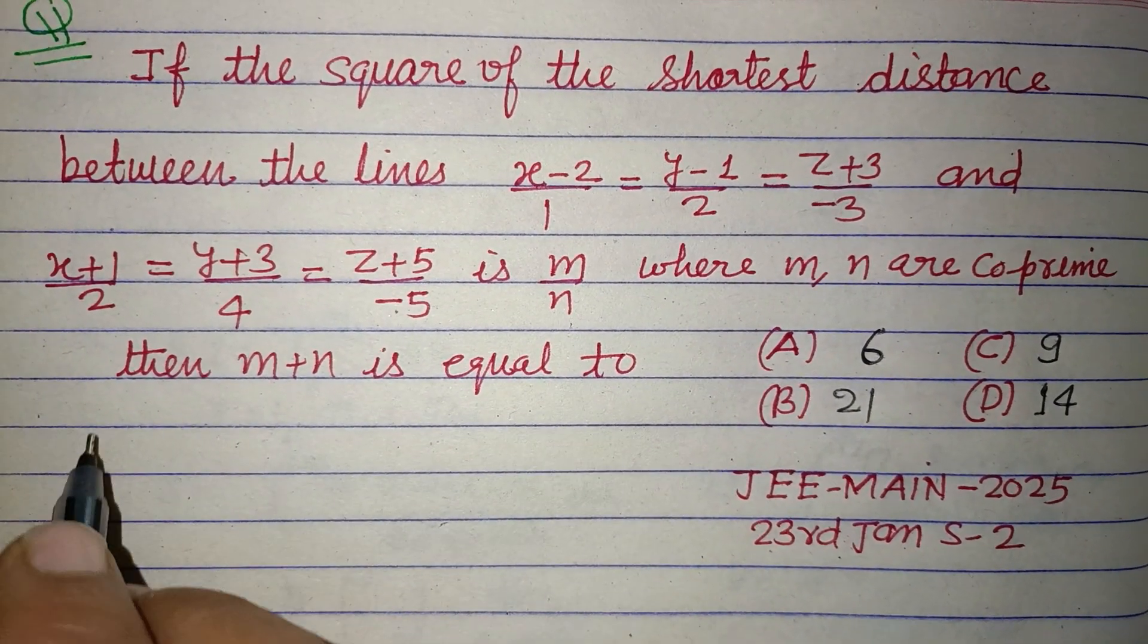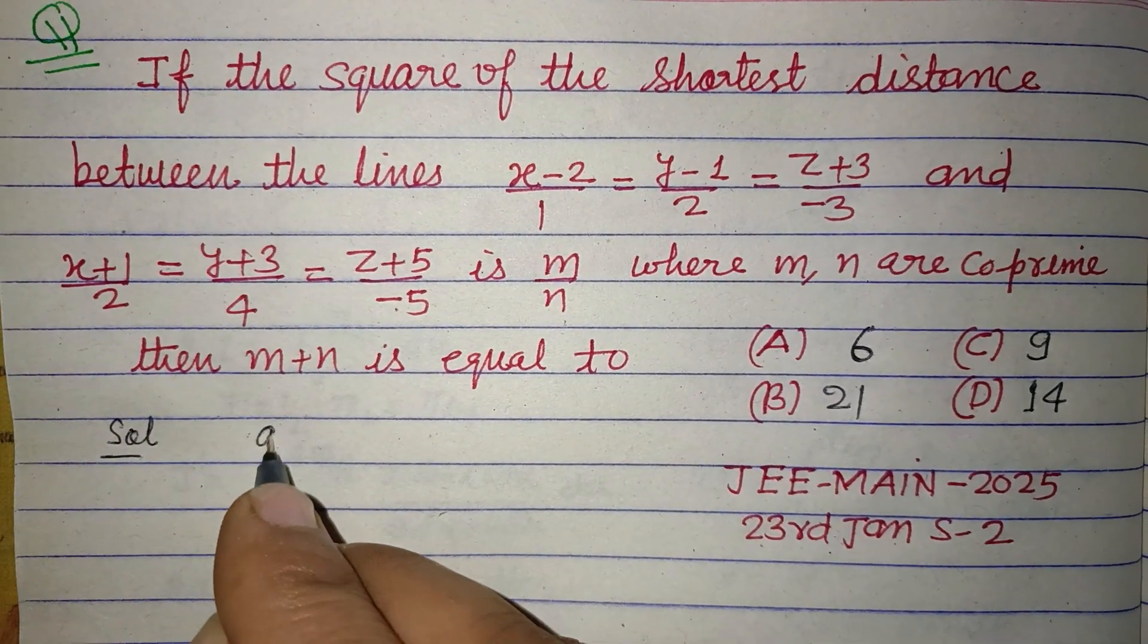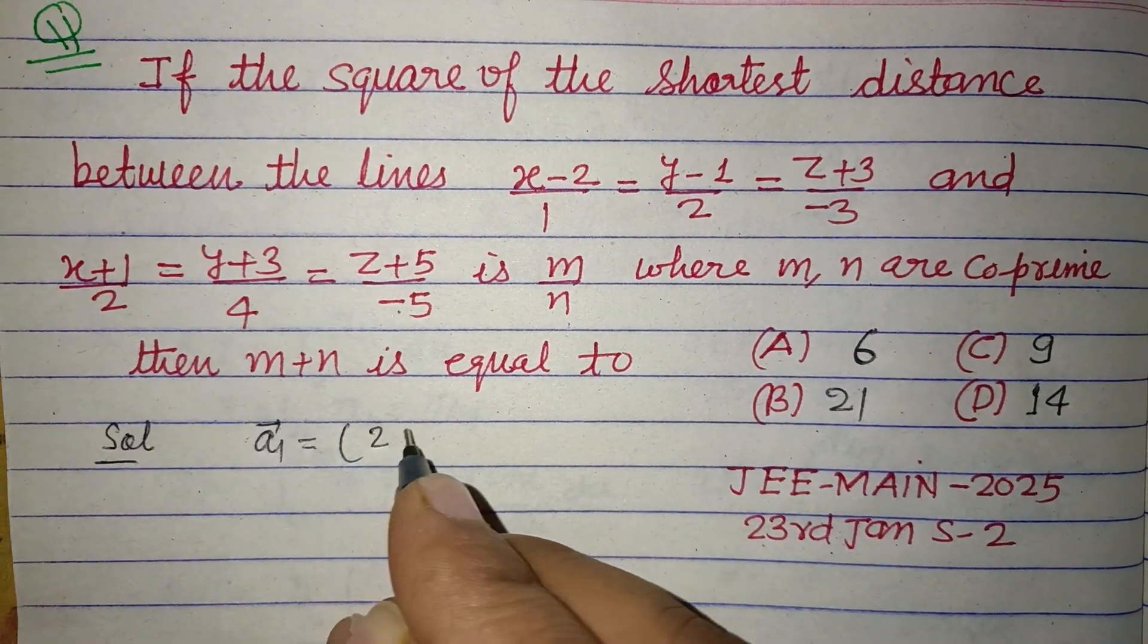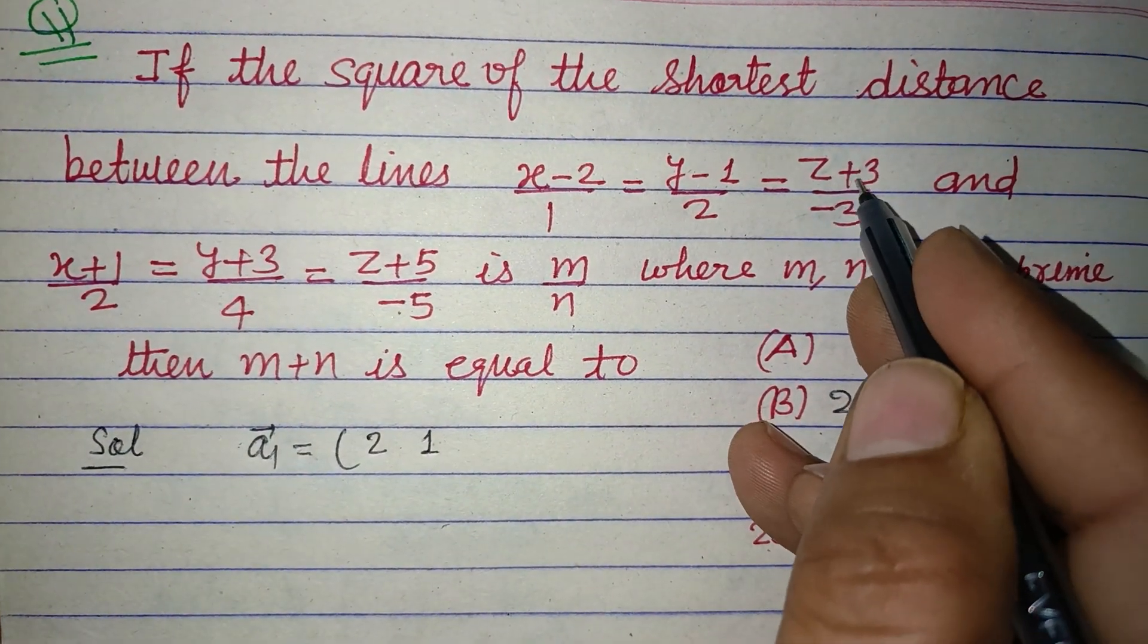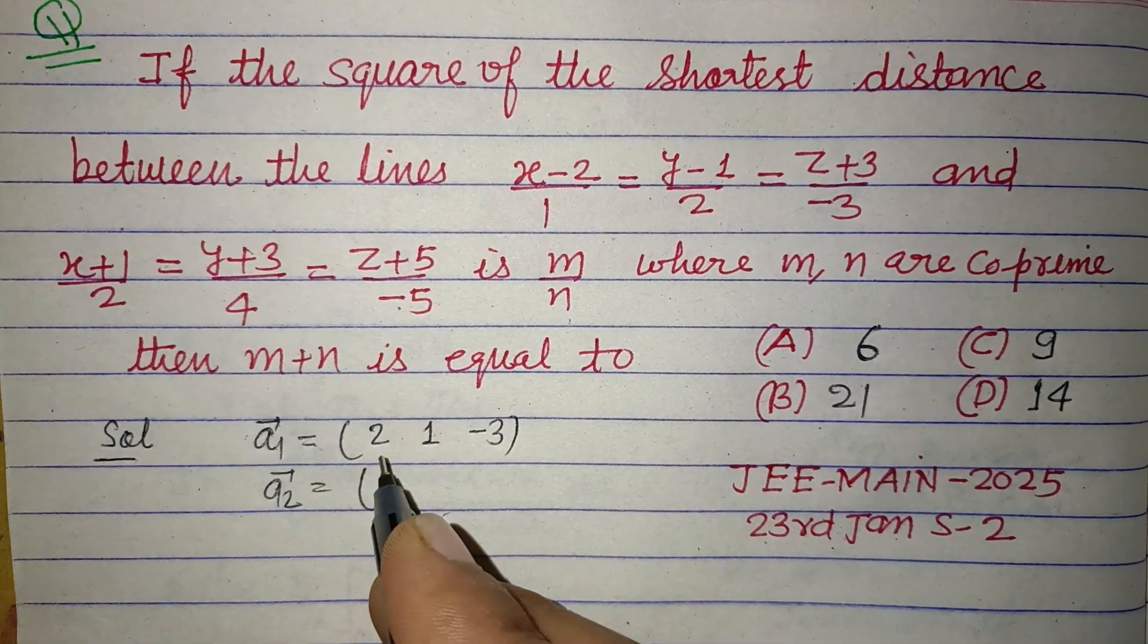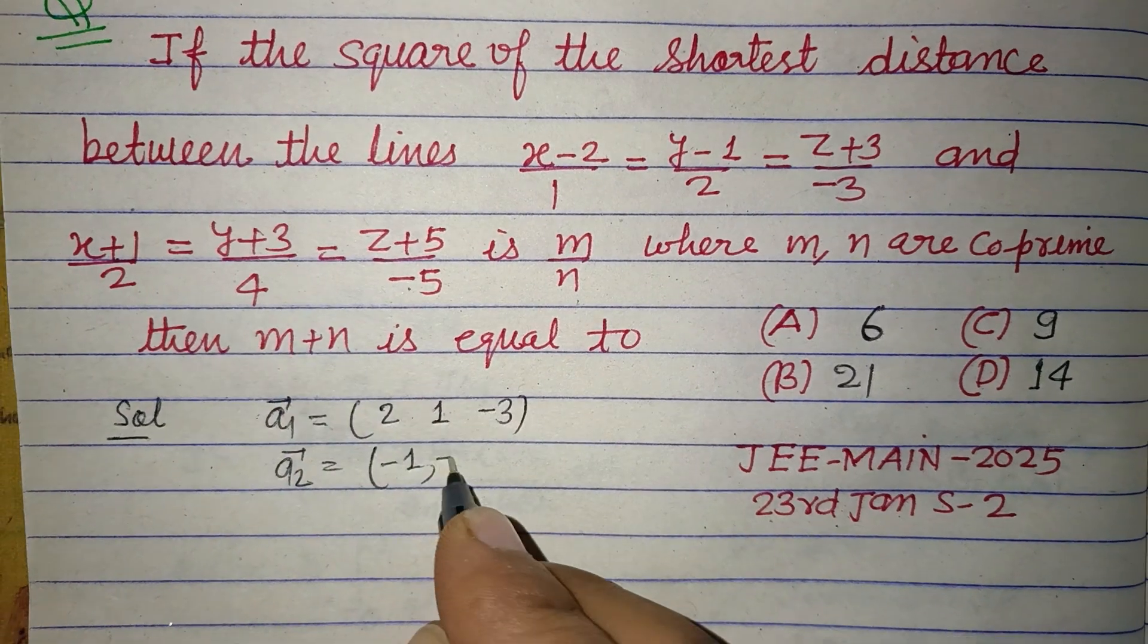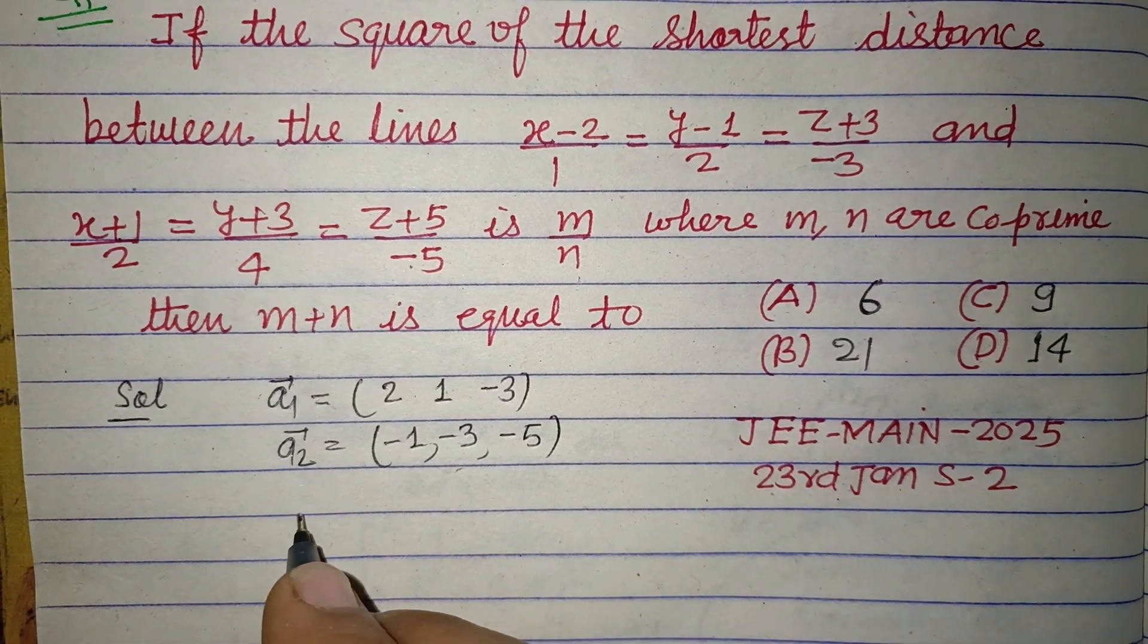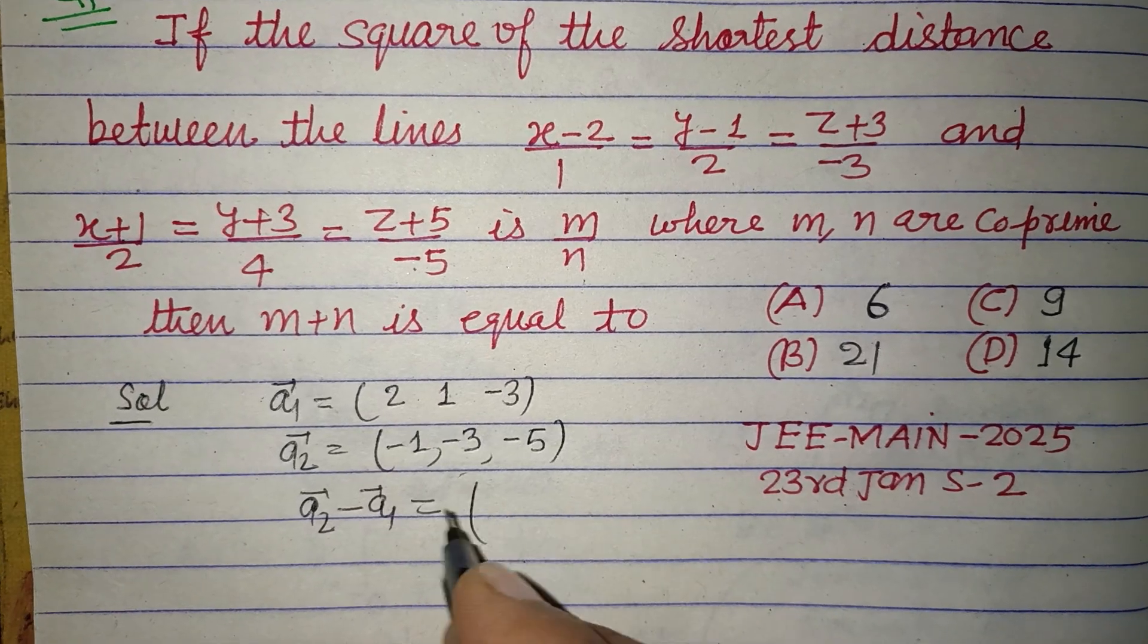So students, from the lines, we begin. Let a1 equals (2, 1, -3) and a2 equals (-1, -3, -5). Now a2 minus a1, so -1 minus 2, -3 minus 1, -5 plus 3, giving us (-3, -4, -2).